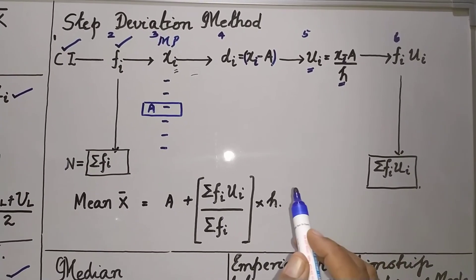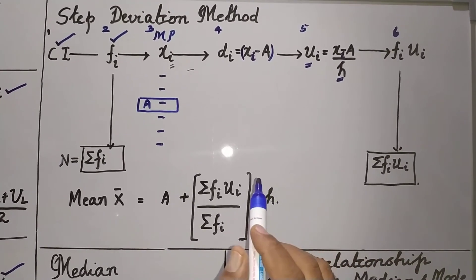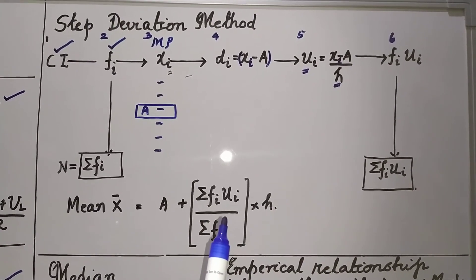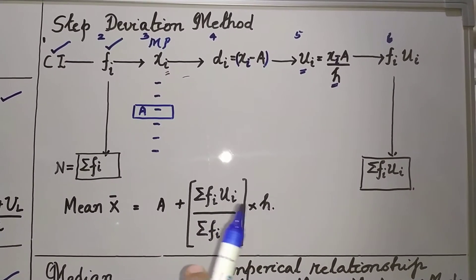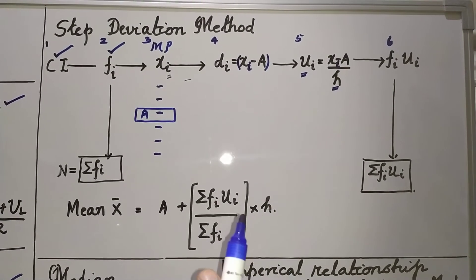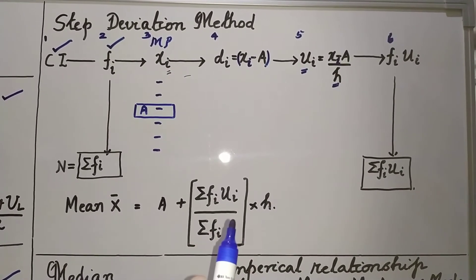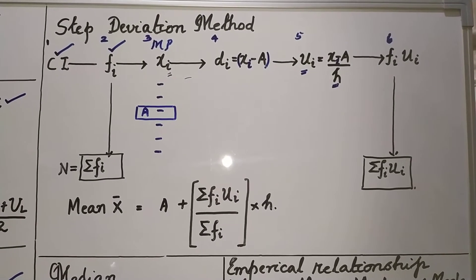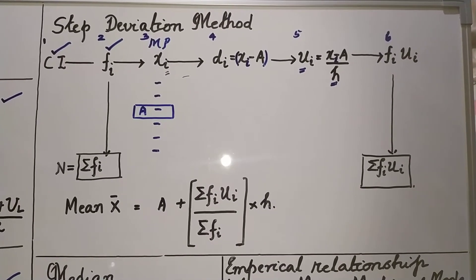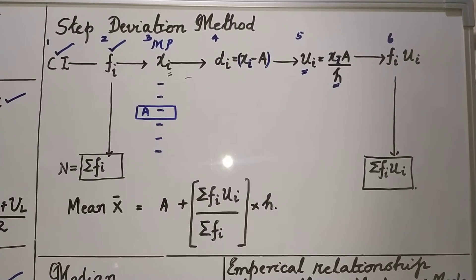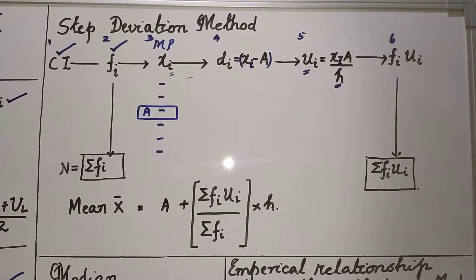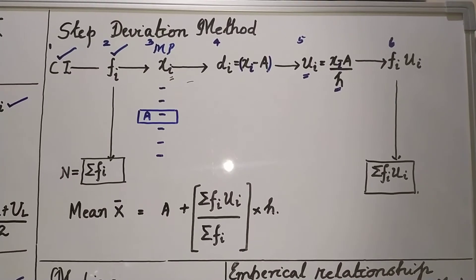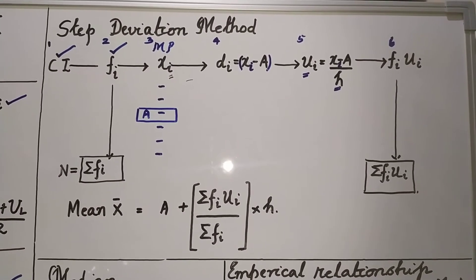In the direct method, you will have four columns: class interval, frequency, midpoint, and product of frequency and midpoint. In the assumed mean method, you will have five columns: class interval, frequency, midpoint, deviation, and product of frequency and deviation. In the step deviation method, you will have six columns.